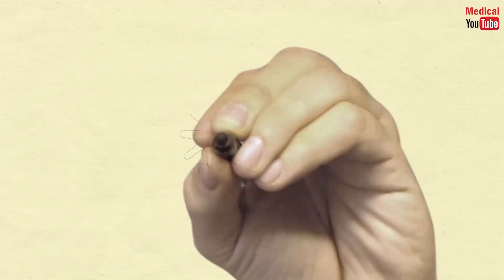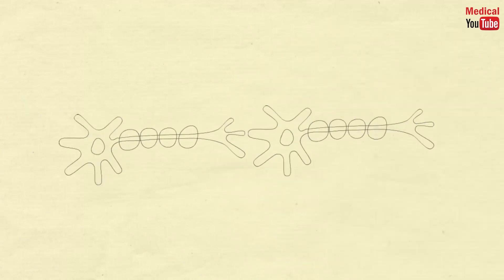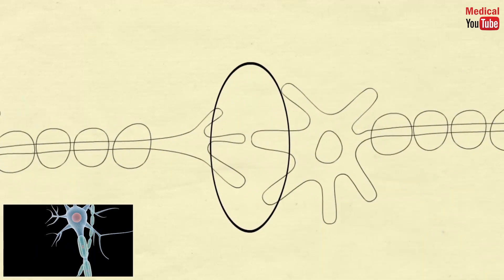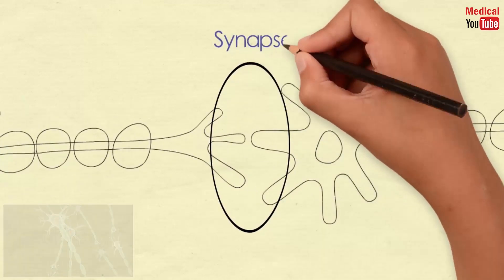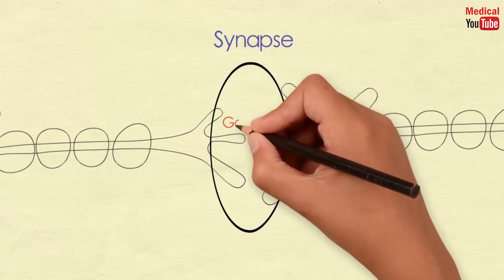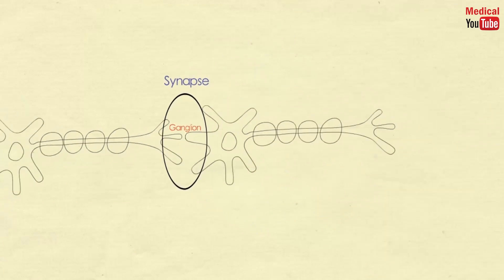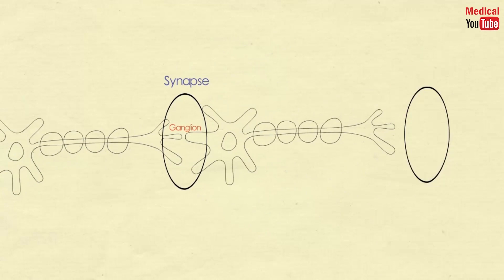That takes us to some terms you should know. The neuron, or nerve cell, is the building block of the nervous system — there is a video in the description that will give you a brief intro about it. A synapse is the junction between two neurons; in this case it is called a ganglion. Or it may be located between the neuron and the effector organ.